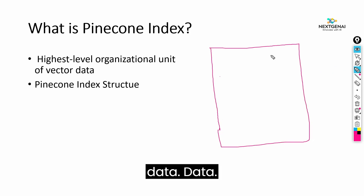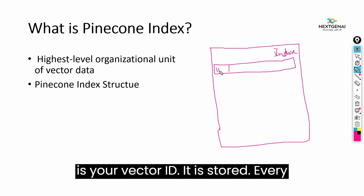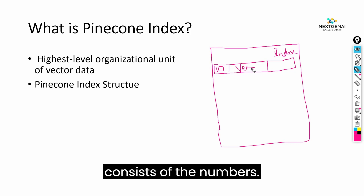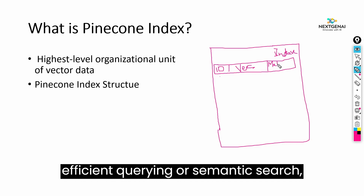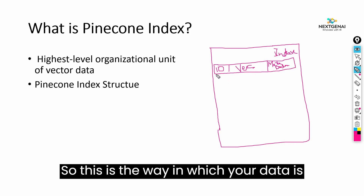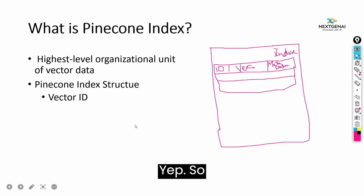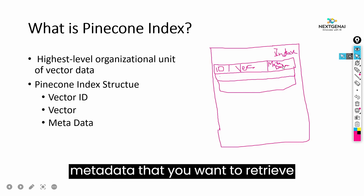If we look at a Pinecone index structure, Pinecone stores all your data with respect to different vector IDs. Here is one vector, and here is its vector ID — every vector is assigned a vector ID. Here come your actual vectors that consist of numbers. If you also want to store metadata along with your vector for efficient querying or semantic search, you can store it alongside the vector as well. Multiple vectors are stored this way: the vector ID, then the actual vector, then the metadata you want to retrieve against your query search.